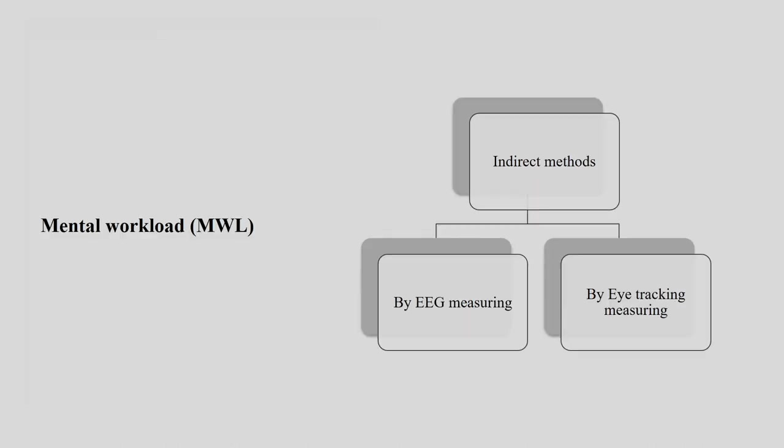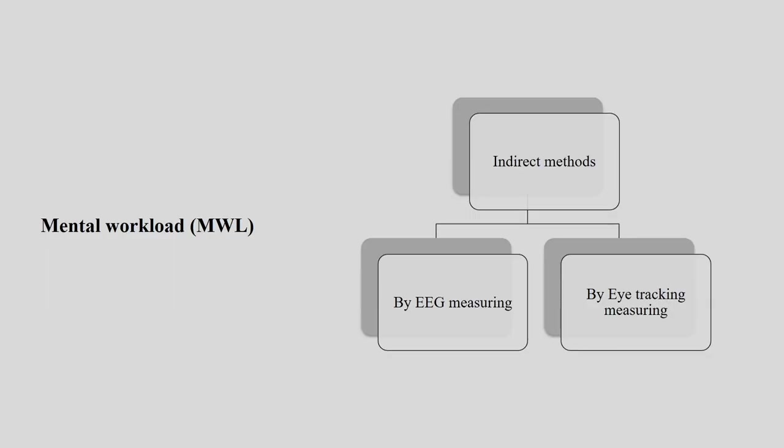When measuring mental workload through indirect methods, two major components come into picture. First is the EEG measuring system, and second is the eye tracking measuring system. We will discuss varieties of EEG first, then move to eye tracking. EEG stands for electroencephalogram; the process is called electroencephalography.